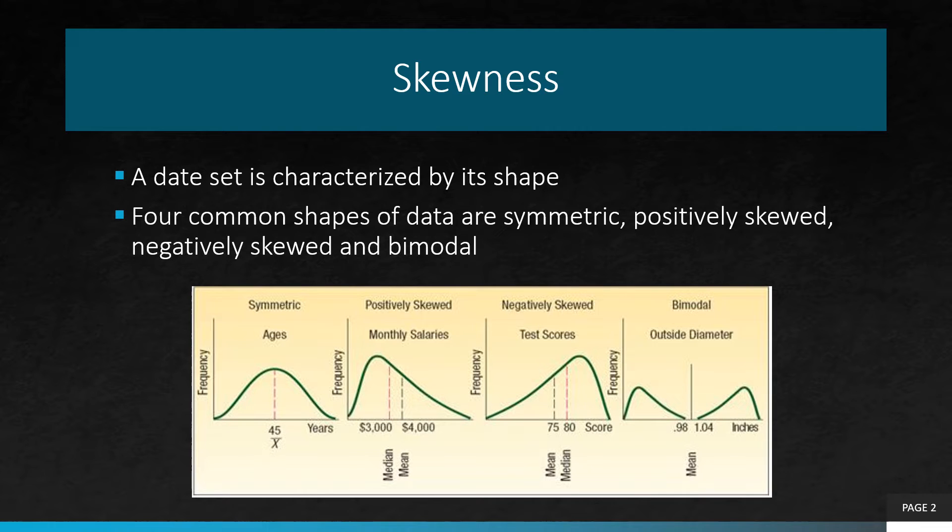In a negatively skewed distribution, there is a single peak, but the observations extend further to the left, in the negative direction, than to the right. In a negatively skewed distribution, the mean is smaller than the median.